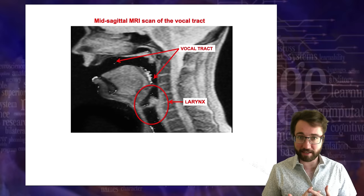These consonant sounds — p, b, m — are what we call phones. A phone is a distinct, discrete speech sound. A phone is not a letter; a letter is an aspect of the English writing system. We're thinking about language as an auditory, spoken language — so we think about the units of sound as they are pronounced. Soon, representing these sounds using the English spelling system won't be sufficient. We're going to have to introduce a new alphabet called the International Phonetic Alphabet, which enables us to precisely represent these phones.